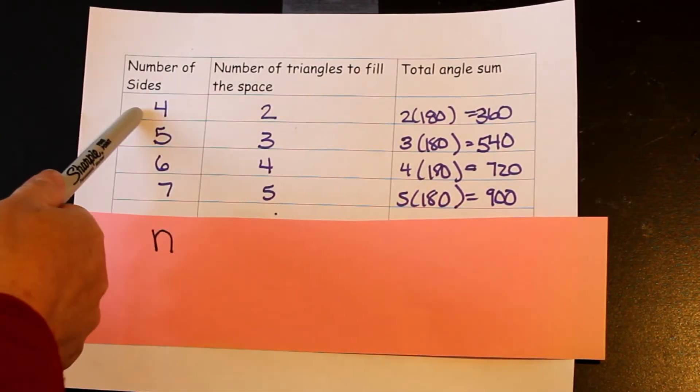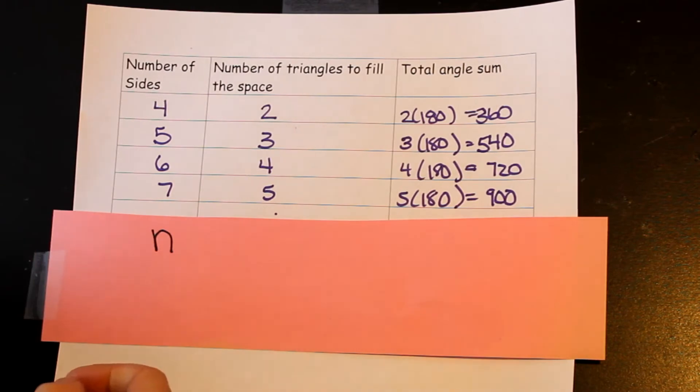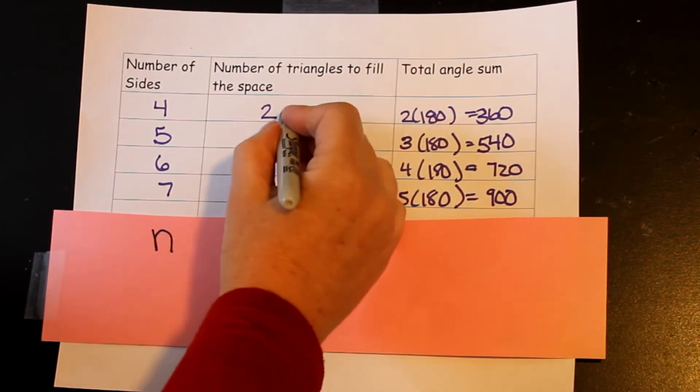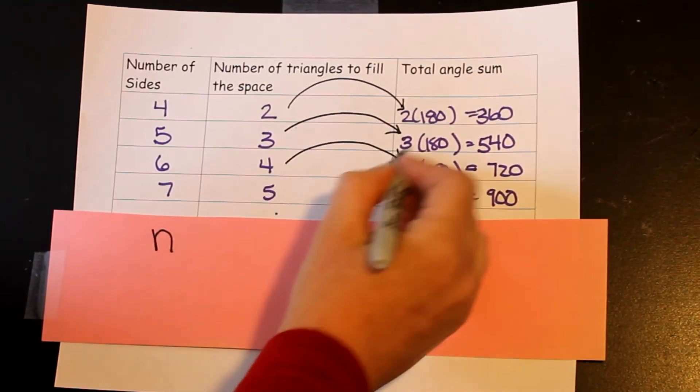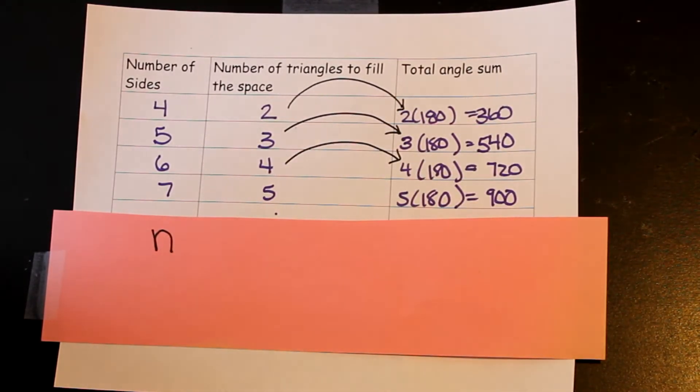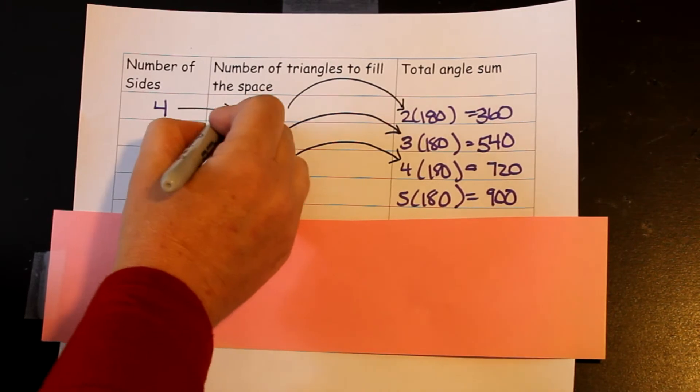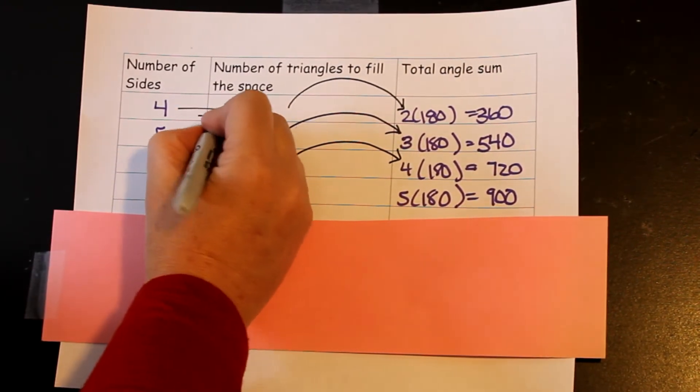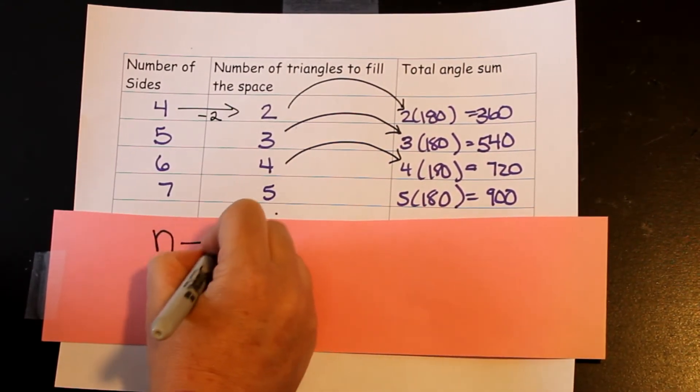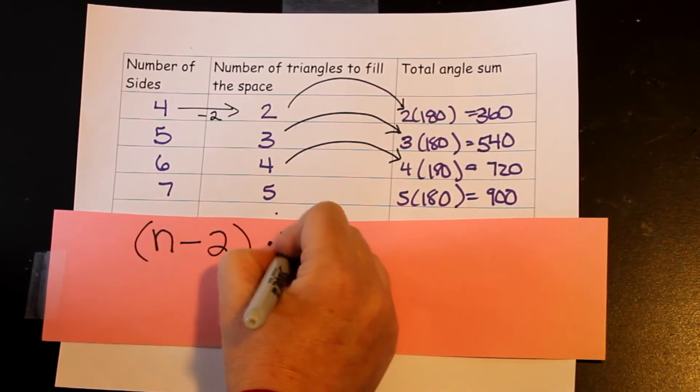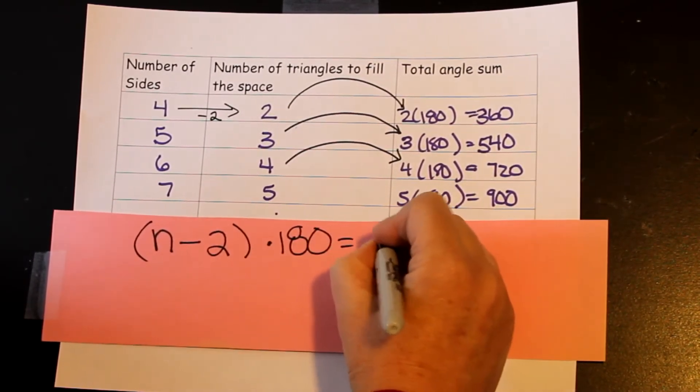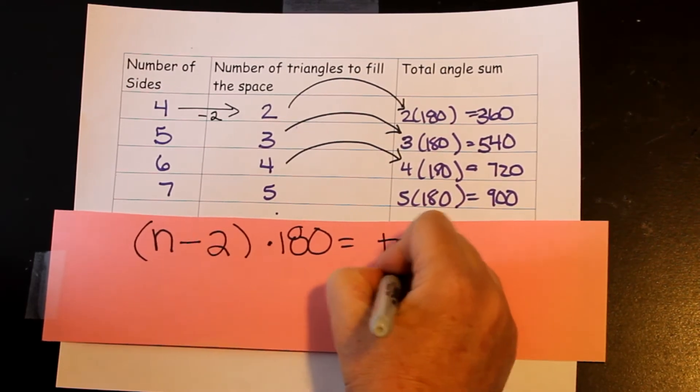So I would say, noticing that this number kept repeating over here, that the 180 is a constant and doesn't change. And how do I get from here to here? Well, I subtract two. So we would say, no matter what your sides are, subtract two, and then you take that whole number and multiply it by 180. And that's going to give you the total degrees inside your shape.